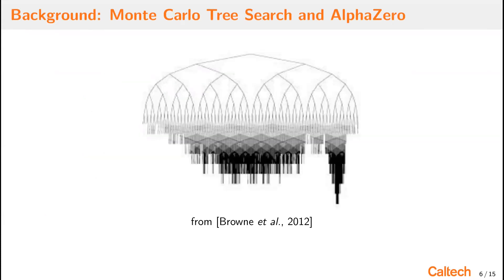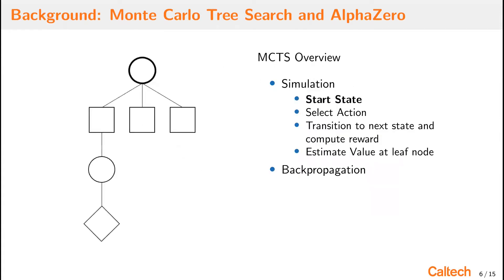Monte Carlo Tree Search is a tree-based online solution to the planning problem. It finds a solution by considering all the possible actions and expanding the tree towards areas of high reward. In particular, there's two steps, simulate trajectory and back-propagate information from the trajectory through the tree to inform future simulated trajectories.